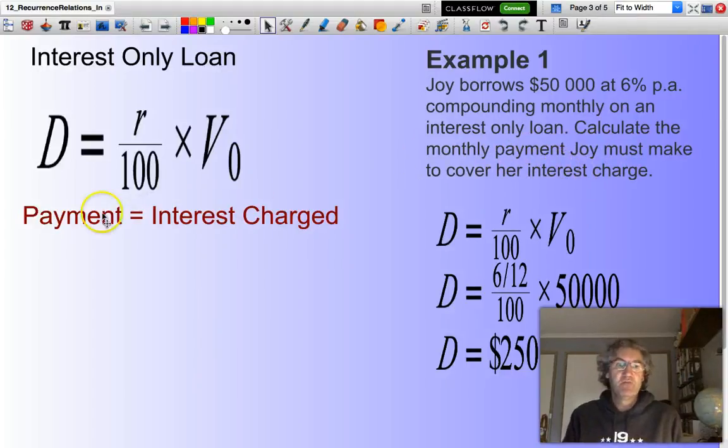Effectively, what I'm trying to say is my repayment, the D, must match my interest. So what I do is I go and calculate the interest. D must equal 6 divided by 12. There's 6% compounding monthly, so there's 12 months in a year. So 6 divided by 12, divide by 100, then multiply that by $50,000.